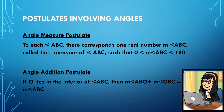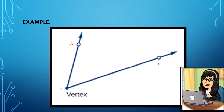Angle Addition Postulate: it states that if O lies in the interior of angle ABC, then measure angle ABO plus measure angle OBC equals measure angle ABC. Let's have this figure to understand the postulate. We have angle ABC where B is our vertex, and ray BA and ray BC are the sides of the angle. If we have O at the interior of the angle and connect it with point B, the vertex, we have ray BO. If we add the measure of angle ABO to the measure of angle OBC, it is just equal to the measure of angle ABC.